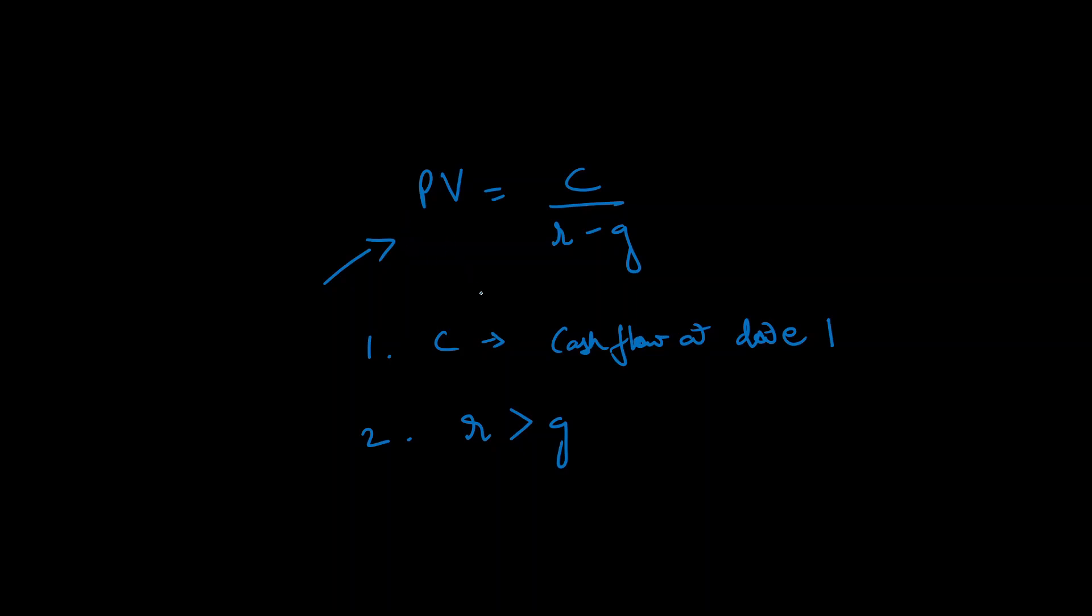In summary, a growing perpetuity is just like any other perpetuity but it grows over time, and this is the formula you can use to calculate its present value. Hope you got that, see you in the next one.